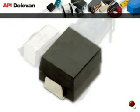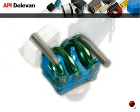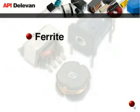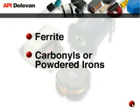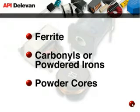An inductor is a passive electronic component consisting of magnet wire used to create an inductance. An inductor need not have a core. In fact, air can be the core and is actually the purest form of an inductor. There are many types of magnetic cores — ferrite, carbonyls or powdered irons, and powder cores like MPP, high flux, and cool mu — all of which can be used to produce a magnetic advantage or to produce higher inductance in a small package.